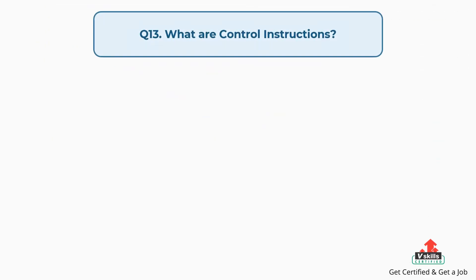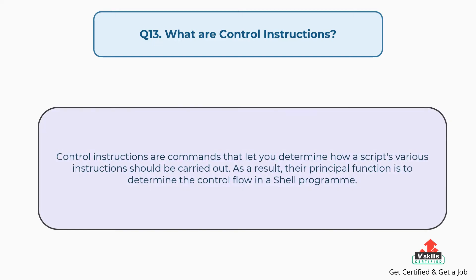Question number thirteen: what are control instructions? Control instructions are commands that let you determine how a script's various instructions should be carried out. Their principal function is to determine the control flow in a shell program.